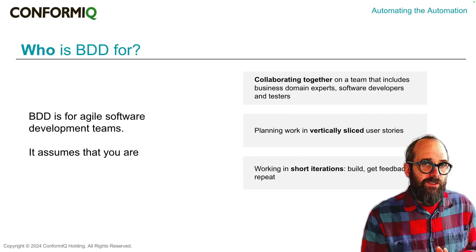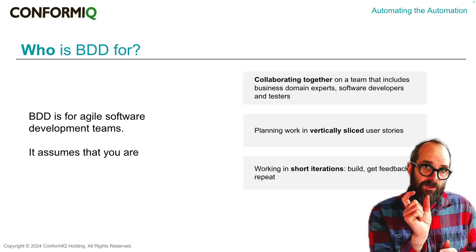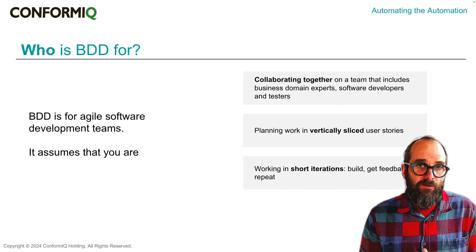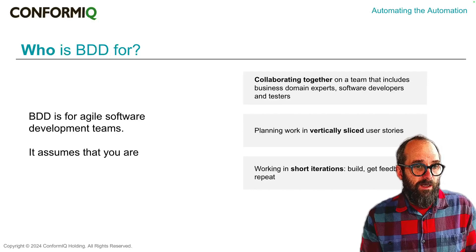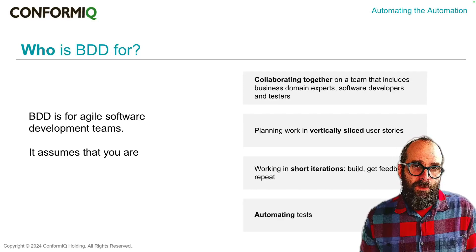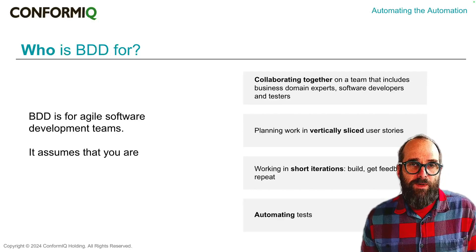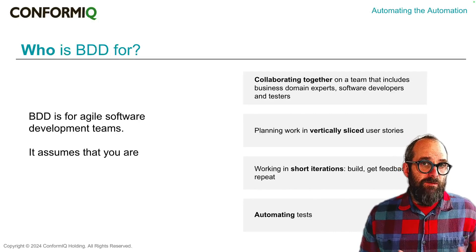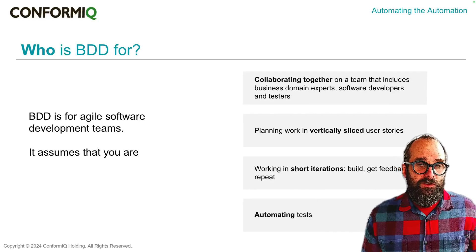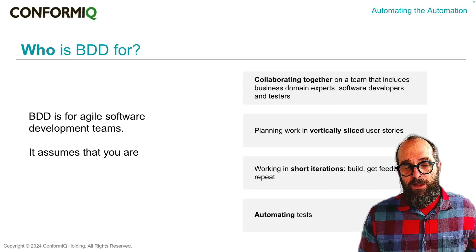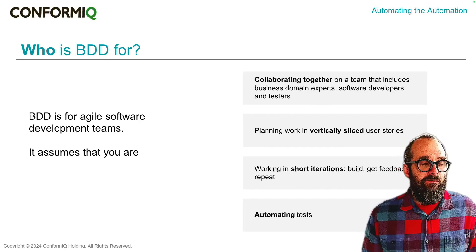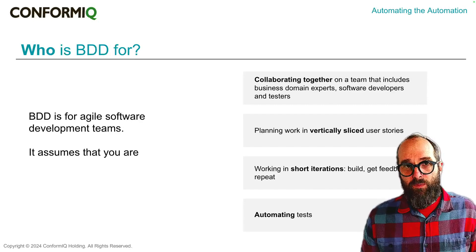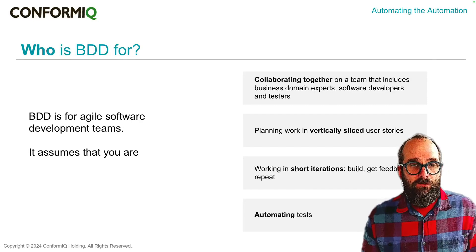We also assume you're working in short iterations. Those slices are hopefully nice and thin, only adding a small increment of behavior at a time. Once you ship those changes in front of users, you're going to listen to them, get their feedback, and repeat. We also assume that you are automating your tests — fine to do some manual exploratory testing as well, but the team should be capable of writing software that tests the production code, generally doing that as they do the development work, if not using test-driven development practices to drive out the development from tests.